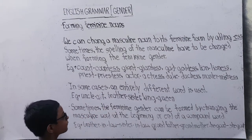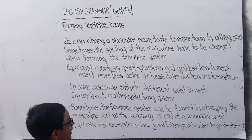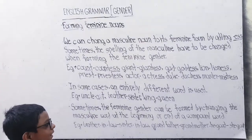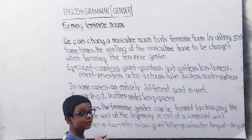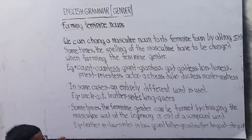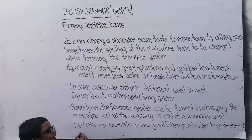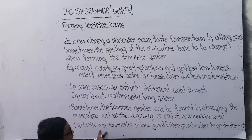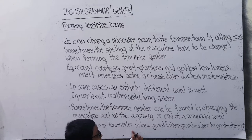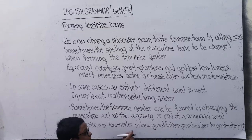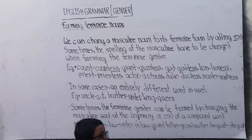Sometimes the feminine gender can be formed by adding the masculine word at the beginning or end of a compound noun. Compound nouns consider two nouns to be formed. For example: Governor-in-law can use sister-in-law, or grandfather and grandmother.